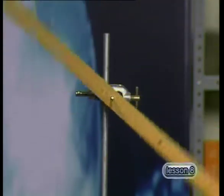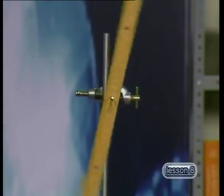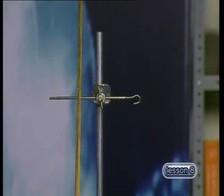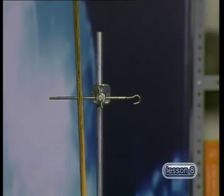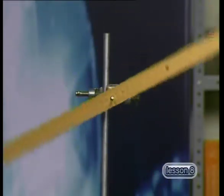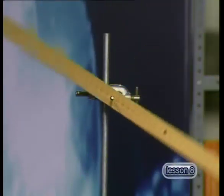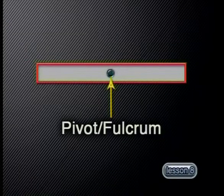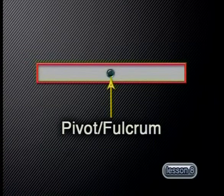Before we start looking at the actual forces involved when we turn things, let's first get some terminology sorted out. All objects turn around a certain point. This point is called the pivot or fulcrum of the object. This idea of the pivot or fulcrum is similar to the concept of center of mass — it gives us a point of reference to describe the forces that act on the object. The terms pivot and fulcrum can be used interchangeably. For the rest of this lesson, we will refer to this point as the fulcrum.